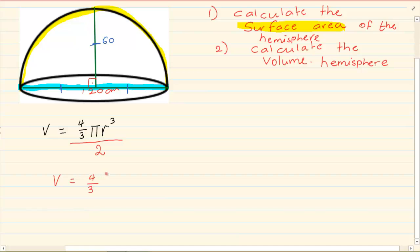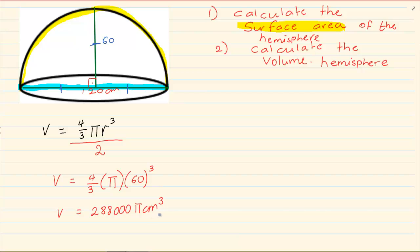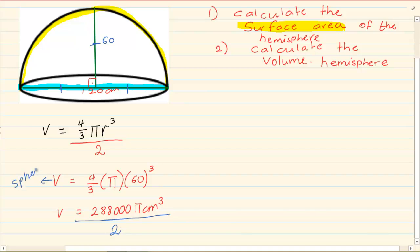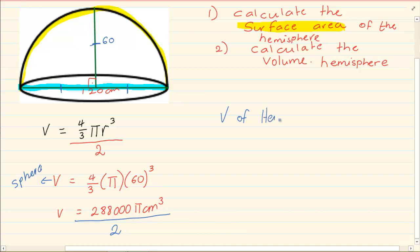So we have 4/3 π with r = 60 to the power of 3. The volume of the full sphere comes to 288,000π cm³. But remember, what we calculated was the volume for the sphere. We need to take that answer and divide it by 2, because we are cutting the sphere in half. The final answer for the volume of the hemisphere is 144,000π centimeters cubed. Remember — centimeters cubed because we are doing volume.